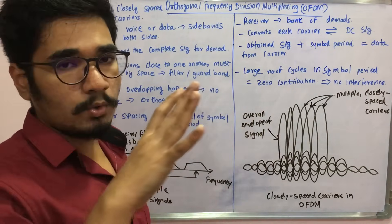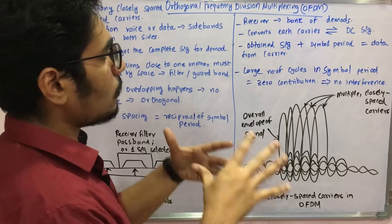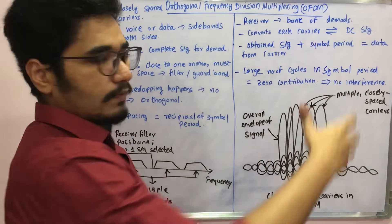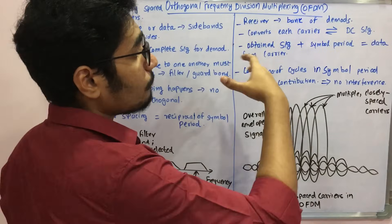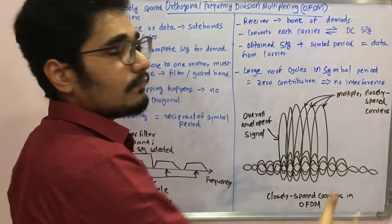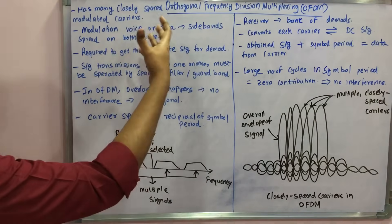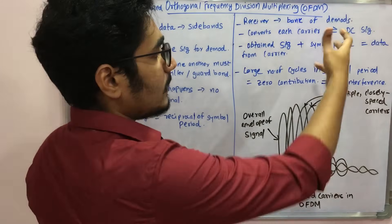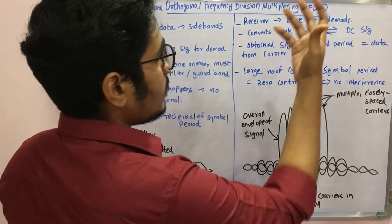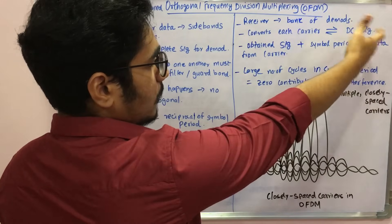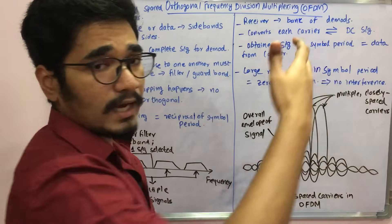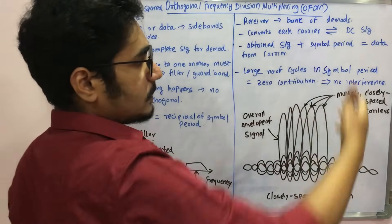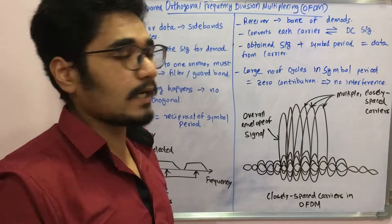Let's see how OFDM works. The receiver — or the demodulation side — is considered as a bank of demodulators. It converts each of the modulated carriers into a stream of DC (direct current) signals. The obtained signal from this conversion step is then added together with the symbol period, and the merged product forms the data for that carrier.